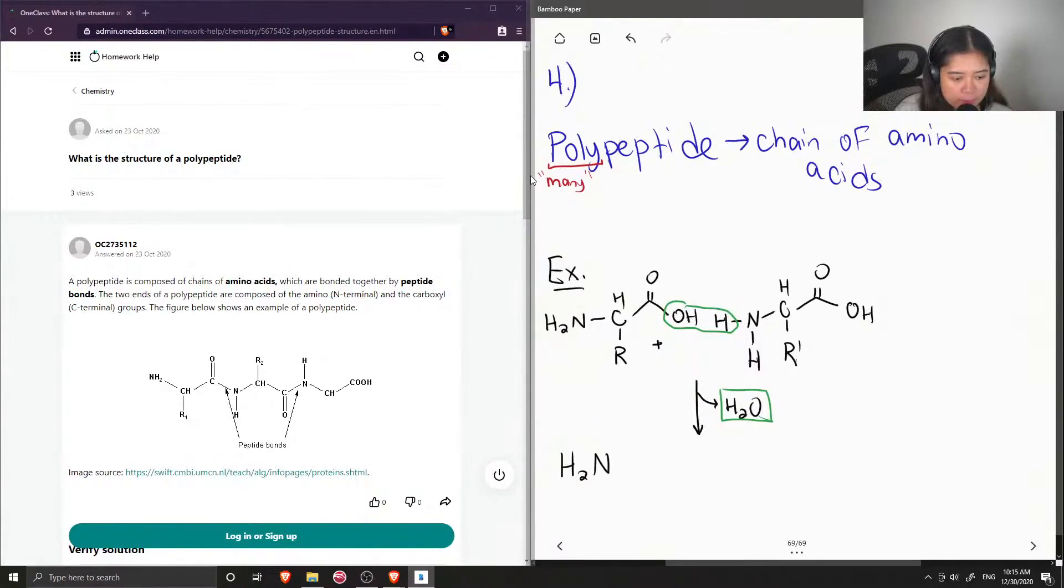So then our product is the first amino acid, and now it is attached to the amine group of our second amino acid, and this can continue on to form a long chain of amino acids.